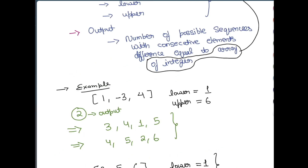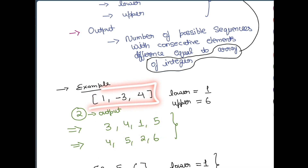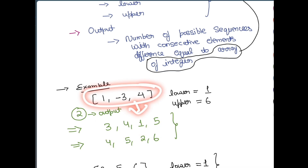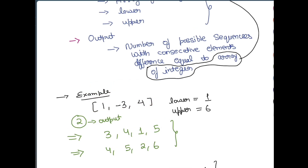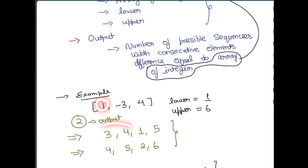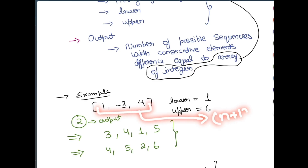An important observation: if the difference array has n elements, the hidden sequence always has n+1 elements. That's because each difference is formed from two consecutive elements, so n differences require n+1 elements total.